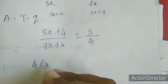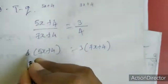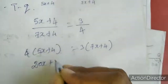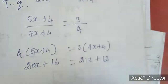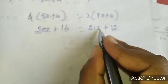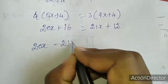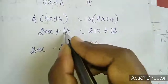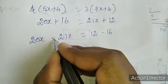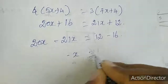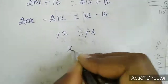This is also cross multiplication: 4 into 5x plus 4 equal to 3 into 7x plus 4. Multiplying inside: 20x plus 16 equal to 21x plus 12. Keeping x values on one side: 20x minus 21x equal to 12 minus 16. That gives minus x equal to minus 4. The greatest number sign is minus, so minus minus cancels, and x equal to 4.